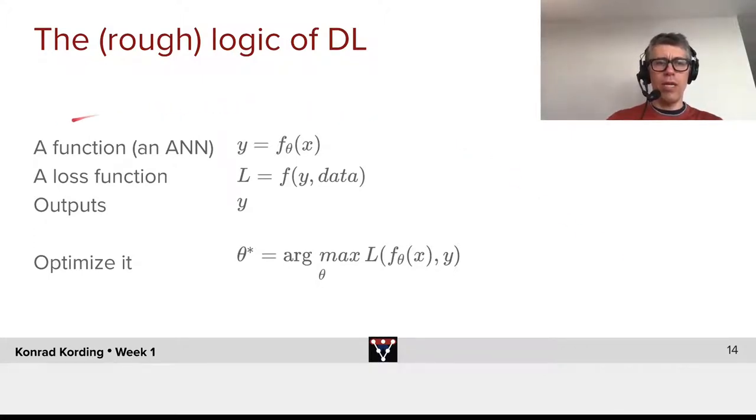We have a first component here, which is a function, a parametrized function, often written as f_θ, where θ are the parameters here. This is what the artificial neural network does. It defines some output y, which is a function with all those parameters of an input x.